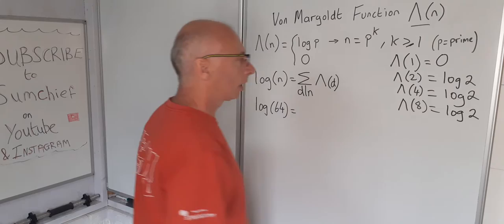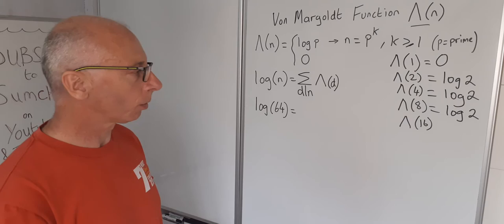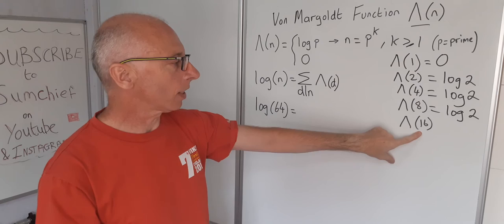Okay next one is going to be 16. So 16 is 2 to the power of 4 or 4 to the power of 2. Now 4 to the power of 2 is no good because it's not a prime number, but we can also say that 16 is 2 to the power of 4.